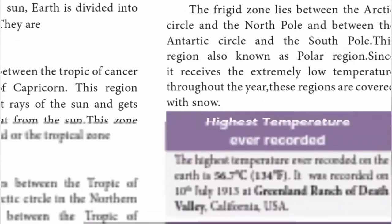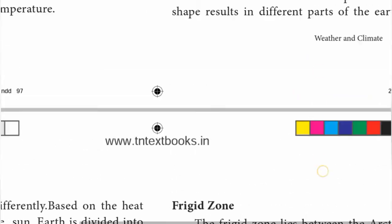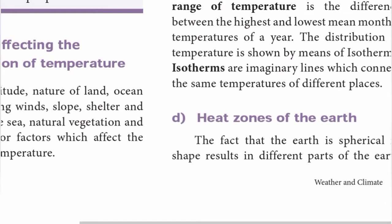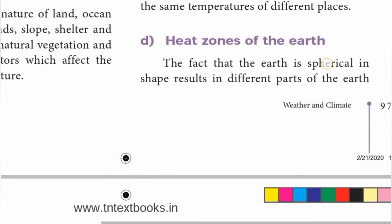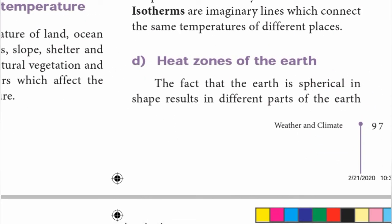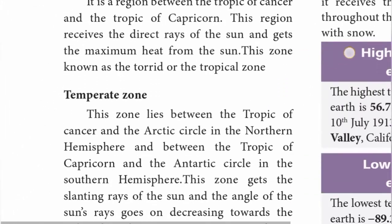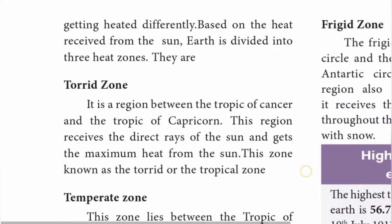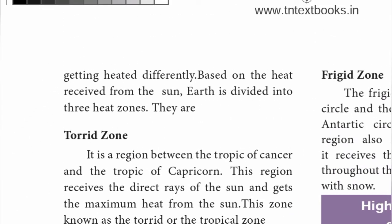Next, heat zones of the earth. The fact that the earth is spherical in shape results in different parts of the earth getting heated differently. Based on the heat received from the sun, the earth is divided into three heat zones.